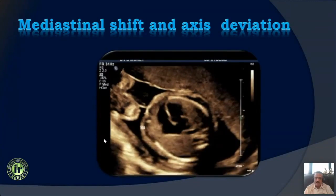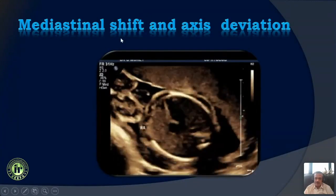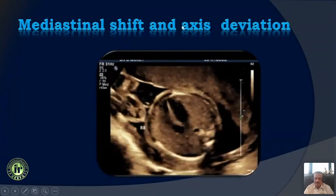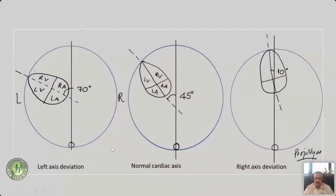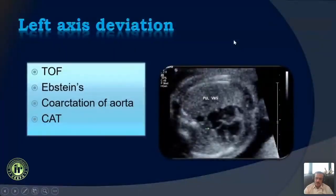We need to understand a basic difference between axis deviation of the heart and mediastinal shift. Normally, the heart is at a 45-degree axis. There can be a left axis deviation where the apex turns more toward the left, or a right axis deviation where the apex goes toward the midline. When you have an axis deviation, we always think of intrinsic cardiac anomalies.